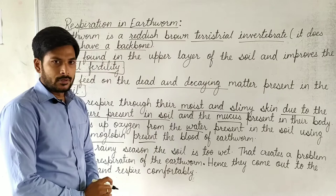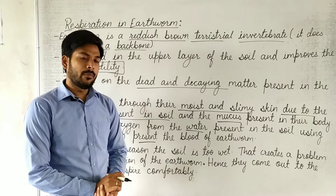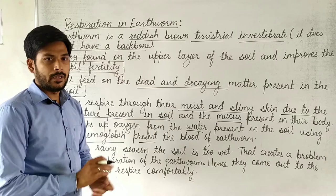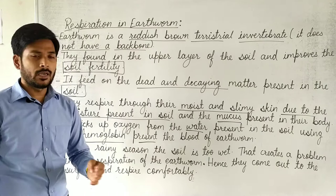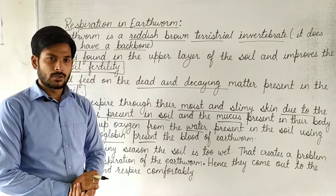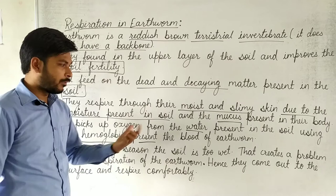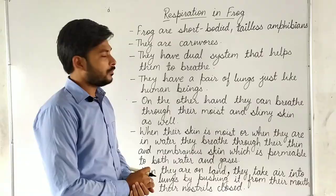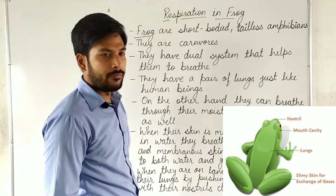During rainy seasons, the soil becomes too wet, which creates a problem in the respiration of the earthworm because it cannot take in oxygen. Hence, they come out to the surface and respire comfortably. Rainy season mein soil zyada wet ho jaati hai aur us wajah se earthworm soil ke upar aa jaate hain.